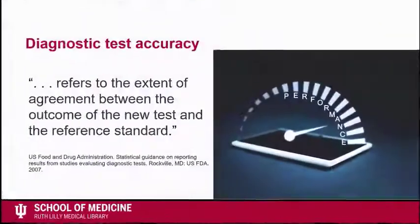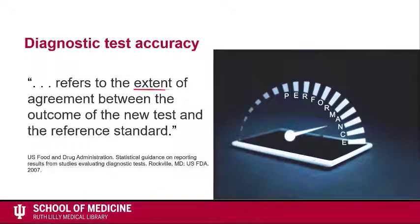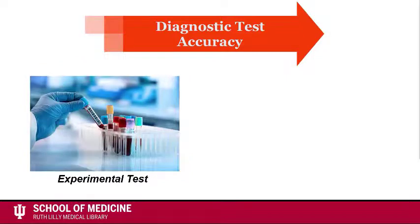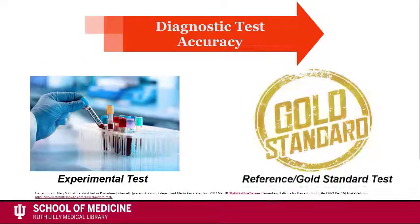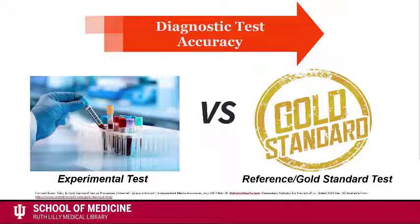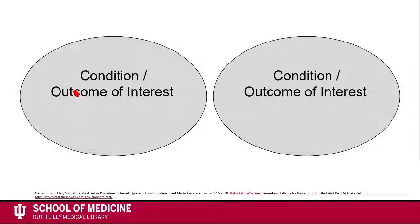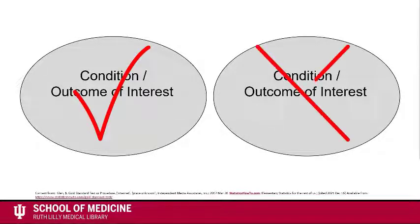Diagnostic test accuracy refers to the extent of agreement between the outcome of the new test and the reference test. Diagnostic test accuracy is determined by comparison of an experimental test to a gold standard test — the best available test for determining whether a patient does or does not have a disease or condition.